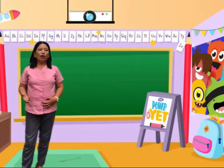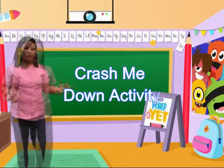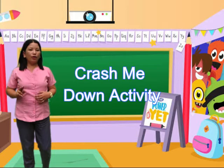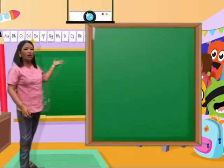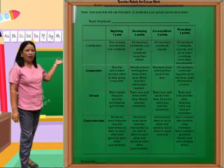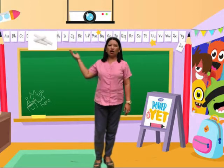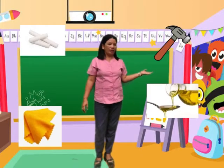And now you will have another activity to do. It is named the 'Crash Me Down' Activity. For that, I will group you into two. I will show you the rubrics on how you are going to do the activity and how you are going to be rated by your group mates. For the Crash Me Down Activity, you are going to use these materials: a piece of chalk, a hammer, a piece of cloth, and a tablespoon of vinegar.